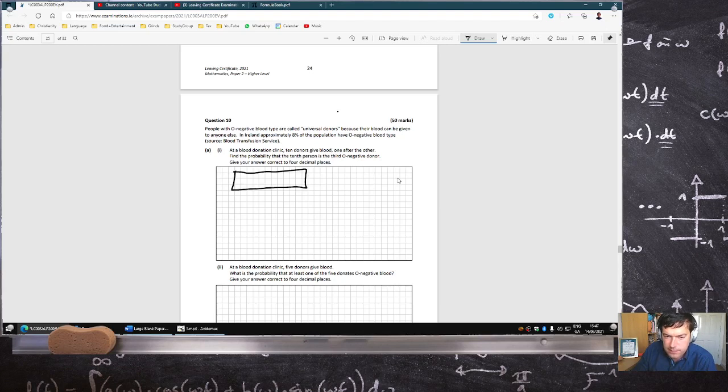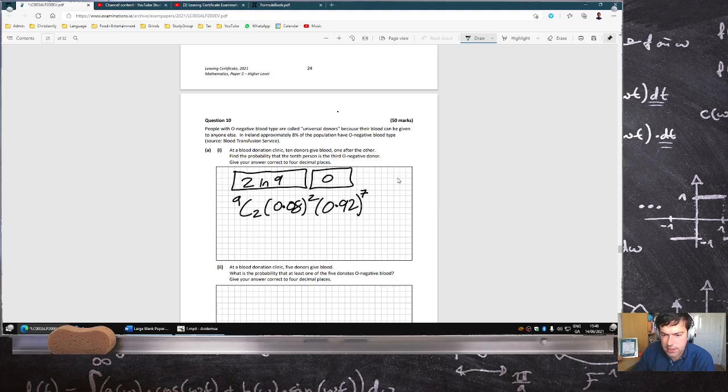This is 2 in 9 of them are O and then the last one is an O. So this is 9c2, 0.08 power 2, 0.92 power 7 and then another 0.08 here.